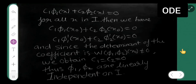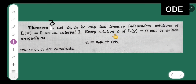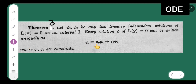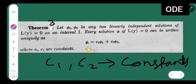Theorem 3: Let phi 1 and phi 2 be any two linearly independent solutions of L(y) = 0 on an interval I. Then every solution phi of L(y) = 0 can be written uniquely as phi = c1·phi 1 + c2·phi 2, where c1 and c2 are constants.